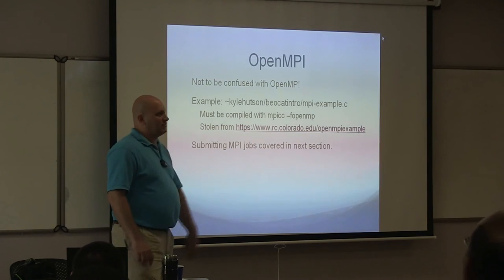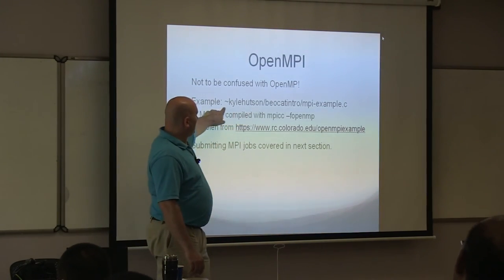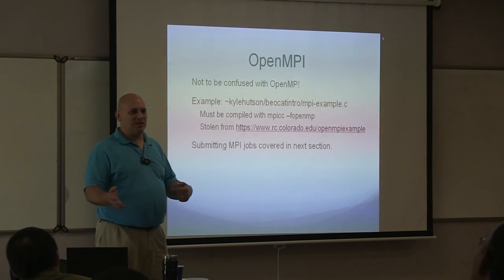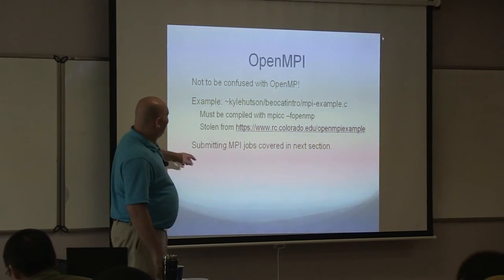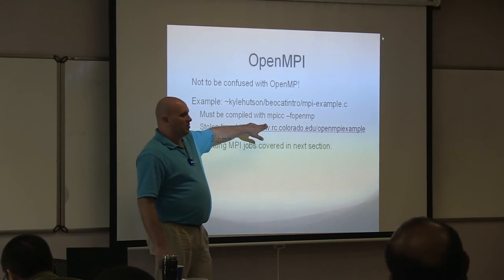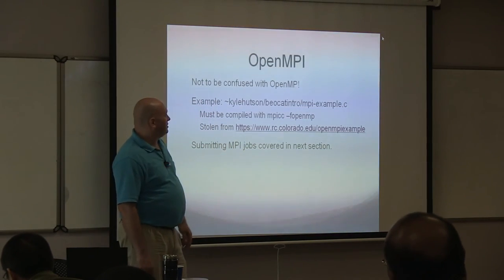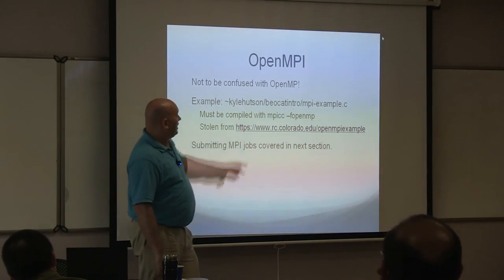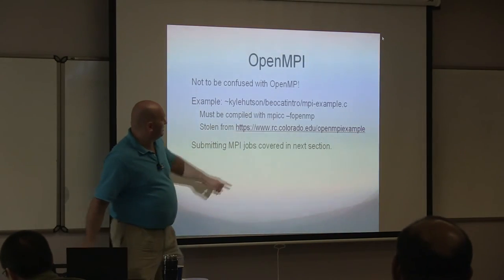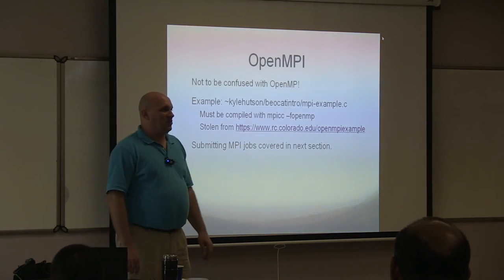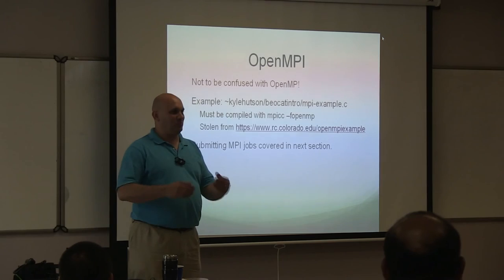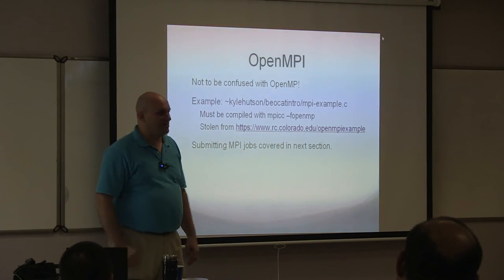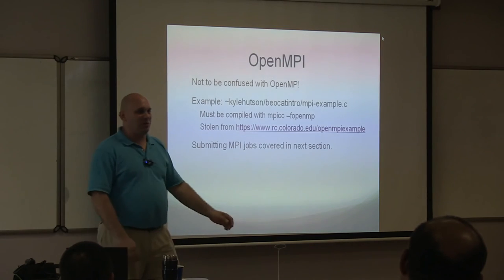I do have one MPI example you can copy from my directory — we're getting short on time. You have to compile with MPICC. There's a gotcha: OpenMP and OpenMPI have very similar names but do different things. OpenMP is parallelism within one machine. OpenMPI is an implementation of MPI — for parallelism across machines. They had to go and make things with very similar names that do completely different things. You'll even catch us off guard if we're not paying attention.